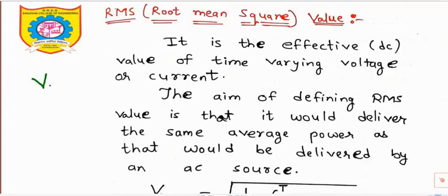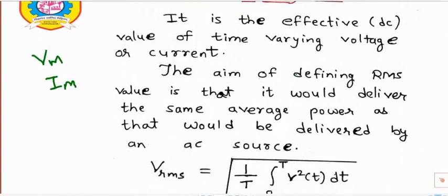Till now we were representing voltage as the peak amplitude voltage and current as the peak amplitude current. Now we will represent voltage and current with their RMS value. Generally our voltmeter and ammeter also measure the RMS value of voltage and current. The definition is: it is the effective value of time-varying voltage and current. We define this RMS value because it would deliver the same average power as that would be delivered by an AC source.